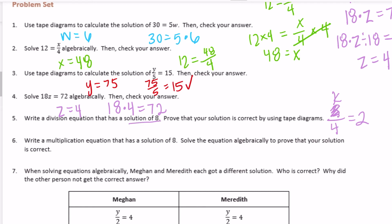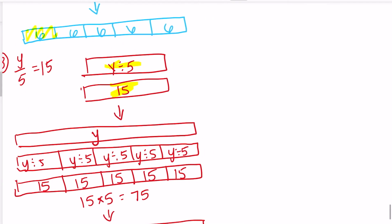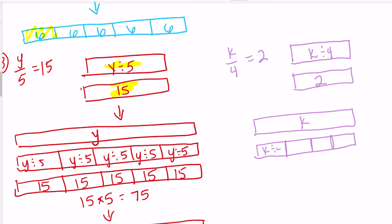But now we just need to prove that the solution is 8. So k divided by 4 is equal to 2. So we know that we're going to have k divided by 4 is equal to 2. So now we have whatever k is, and then we're going to have k divided by 4, 4 of them. And we already know that k divided by 4 is equal to 2. So each of these pieces is 2. So we can prove that this is 2 times 4 is equal to 8. So k is equal to 8.